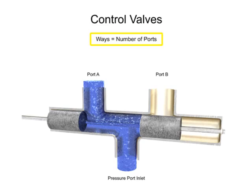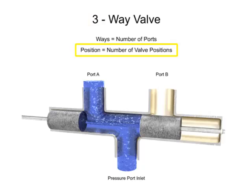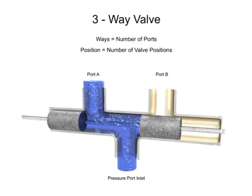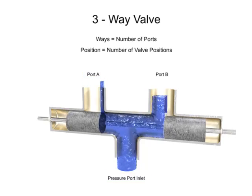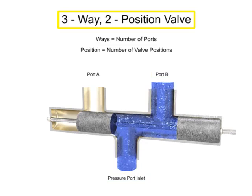A way refers to the number of active porting connections called ports. This valve has three ports, so it is a three-way valve. The term position refers to the number of discrete operating positions of the internal valve element. For this spool valve, one position allows fluid to flow from the inlet to port A and a second position allows fluid to flow from the inlet to port B. Therefore, this is a two-position valve.